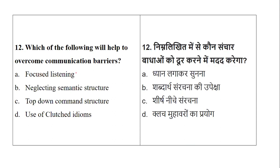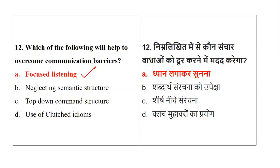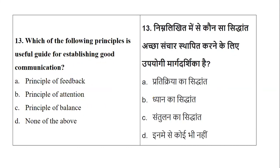Coming to question number 12: which of the following will help to overcome communication barriers? The options are: focus listening, neglect the semantic structure, top-down command structure, or use of clutch idioms. A top-down approach is very centralized and you cannot learn much from it. Too many idioms or complexity creates more barriers. Definitely, to overcome barriers, the one thing you must do is have focused listening — that will help you remove the barrier and get clarity.